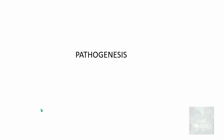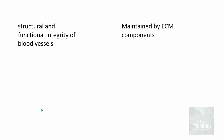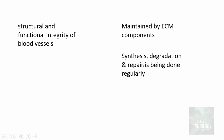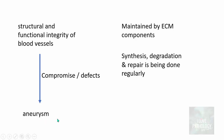The pathogenesis of aneurysm: the structural and functional integrity of the blood vessels is maintained by components of the extracellular matrix, where the synthesis, degradation, and repair of extracellular matrix is regularly carried out. Whenever there is a compromise in these aspects, that leads to aneurysm. Let us see what defects can result in compromise of synthesis, degradation, and repair of extracellular matrix, which leads to aneurysm.